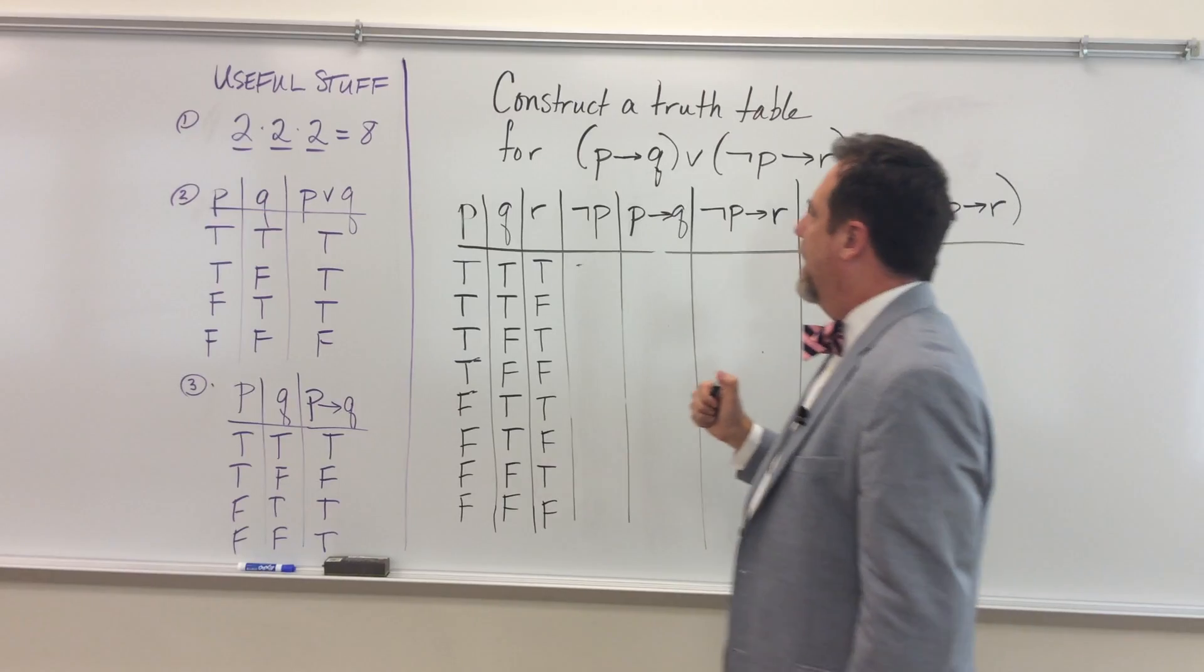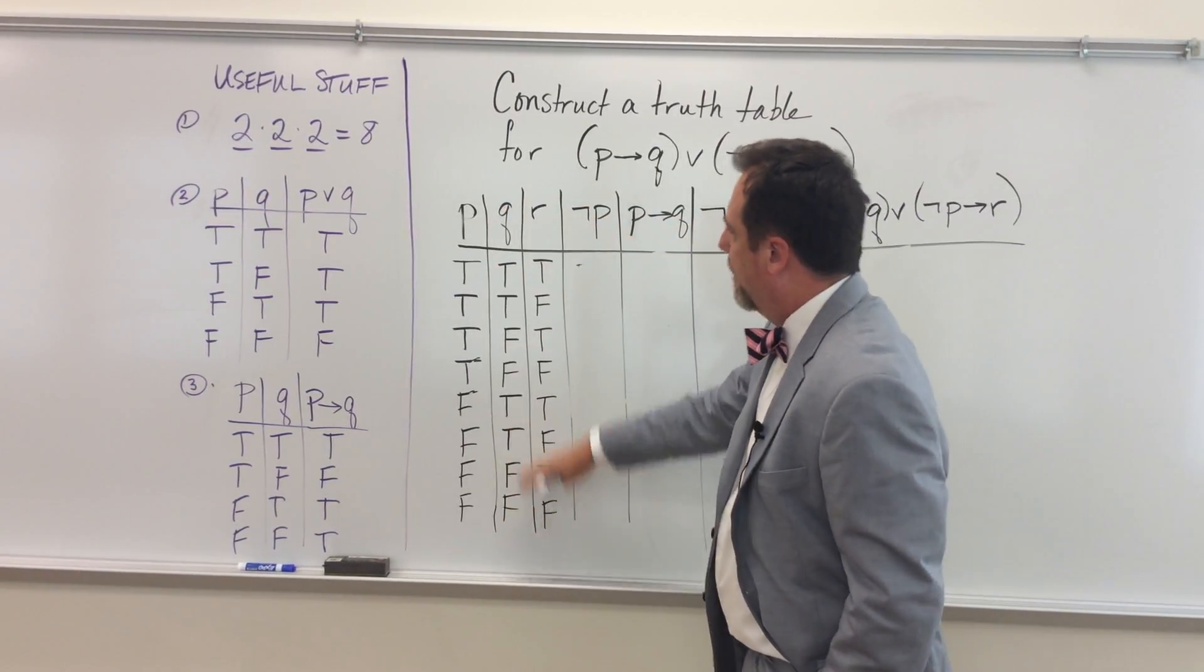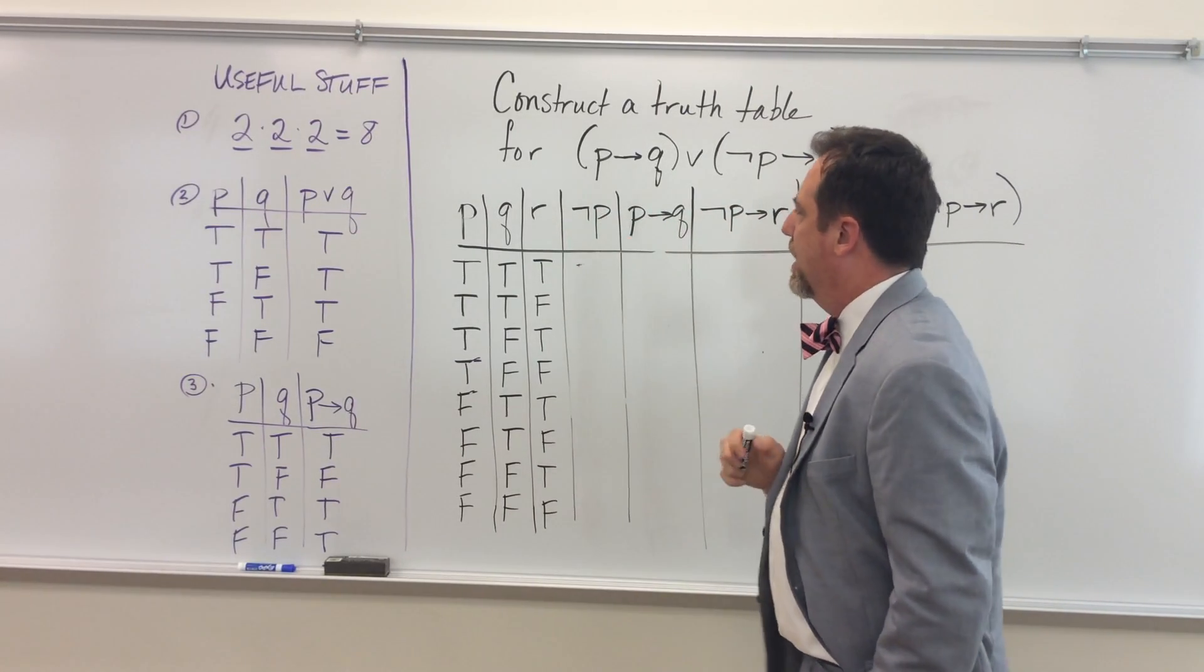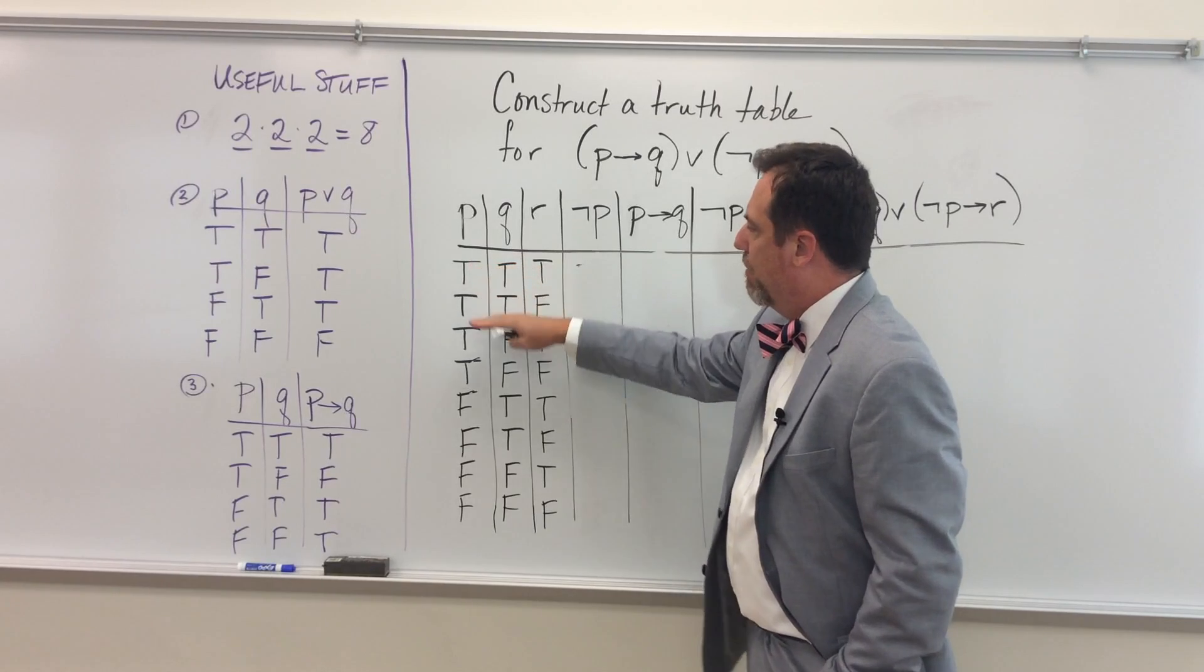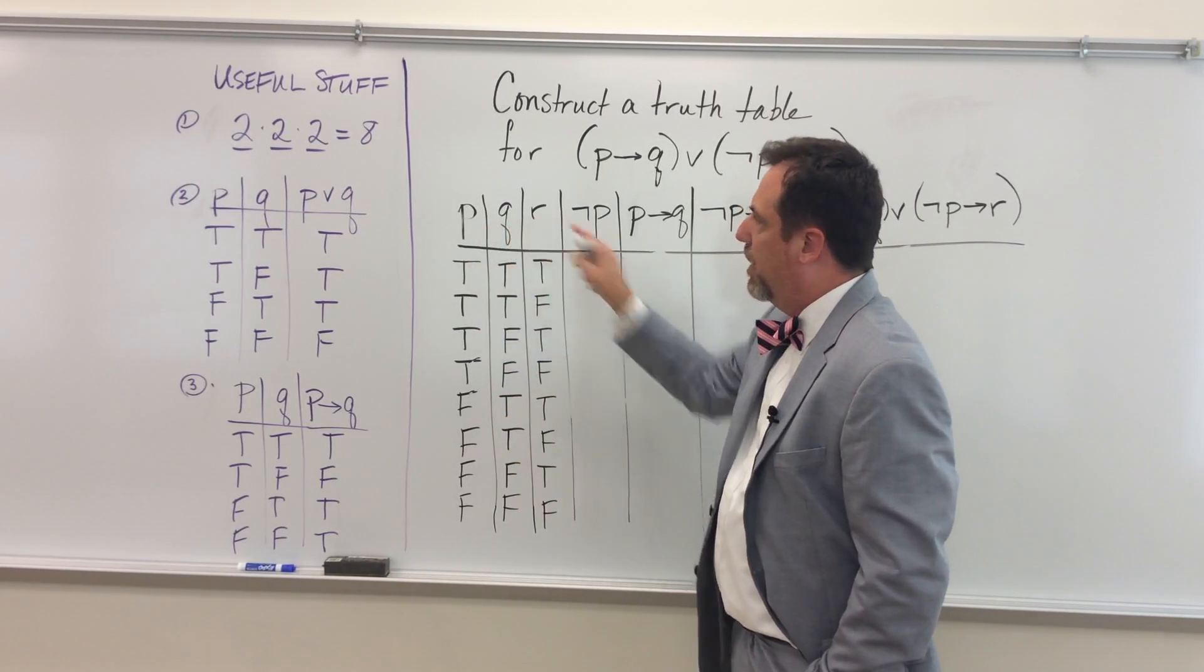So the idea here is that what I've done is I've actually created the skeleton for the truth table. And notice that I have eight rows for the possibilities of the truth values for P, Q, and R.